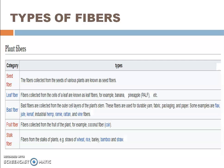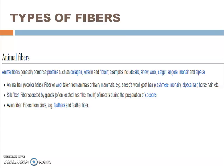Natural fibers are further divided into plant fibers and animal fibers. Plant fibers include seed fiber — fibers collected from the seeds of various plants — and leaf fiber, collected from the cells of leaves. Animal fibers include animal hair, wool taken from animals, and silk fiber, which is secreted by glands of insects during the preparation of cocoons.